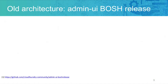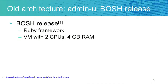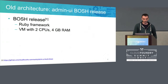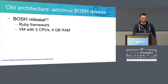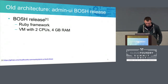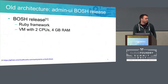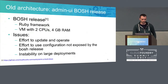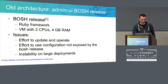Our old architecture with Admin UI was a BOSH release. If you're not familiar with BOSH, it's a great tool to manage the lifecycle of virtual machines. This application was deployed in a virtual machine and we had to take care of the Ruby framework. The BOSH release is open source and it's on the Cloud Foundry community, but it started to be an effort to update and operate — just to update the source code of the application. We had to spend a lot of time to create a new BOSH release, to test it, to deploy it, and every deployment takes time as it's a virtual machine that gets deployed and not just an application.